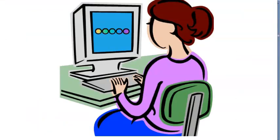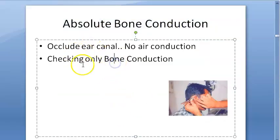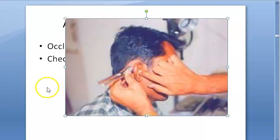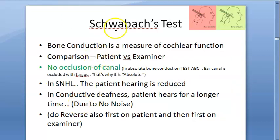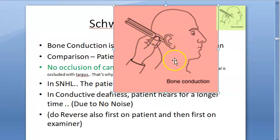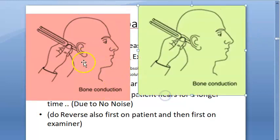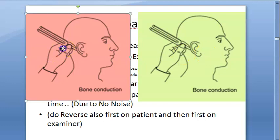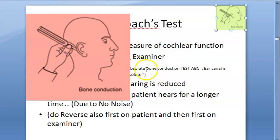The Absolute Bone Conduction (ABC) test checks only bone conduction — you occlude the ear canal with the tragus and ask the person to hear via bone. Schwabach test is the opposite: you do not occlude the ear canal. You keep the vibrating tuning fork on the patient's mastoid, and once the patient stops hearing, you transfer it to your own ear. If you continue to hear, the patient has some degree of sensorineural deafness.